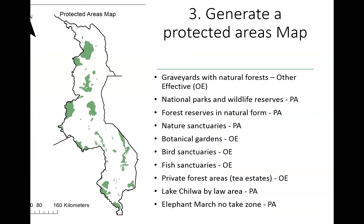The last of the maps was the protected areas map. This was probably one of the easier maps because we simply used gazetted protected areas, but we recognized there were many other effective protected areas that should have been included — for example, graveyards in Malawi, which are natural places where communities keep the forested area and do not cut trees. Nature sanctuaries, botanical gardens, bird sanctuaries, and fish sanctuaries are all protected areas, but we did not have shapefiles representing these. Many were only point data, so unfortunately we could not use them.